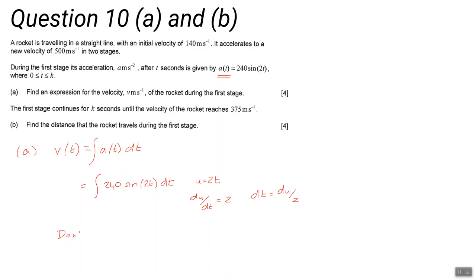Don't forget c. You need to work out c, the constant. You are told that v(0), the velocity at time 0, is 140. That's given in the question, so don't assume that v is automatically 0.